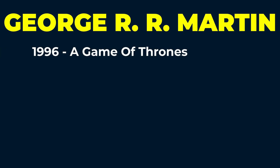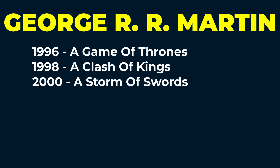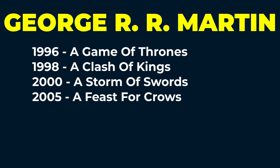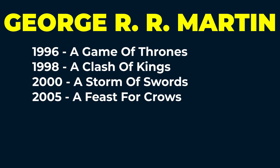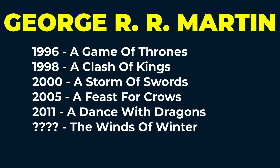Now let's look at A Song of Ice and Fire. First book published in 1996, second in 1998 — a two-year gap. Third book in 2000, another two years. Fourth book? 2005 — a five-year gap. Book five? 2011 — a six-year gap. Book six? It's now 2024 and we're still waiting. Thirteen years so far, and fans still have no real idea when it's coming.